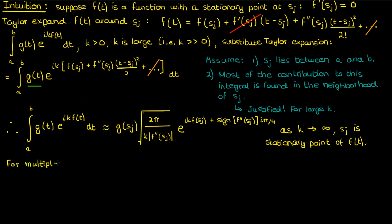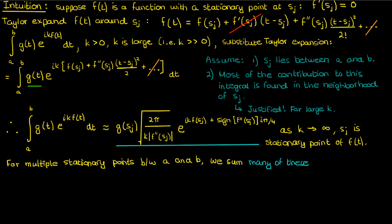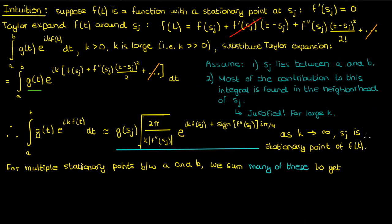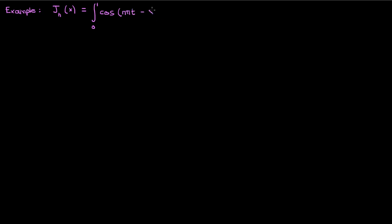Now let's do an example applying the stationary phase approximation using the Bessel function of the first kind of order n. This Bessel function, which I'll denote J_n(x), can be defined using the integral from 0 to 1 of cosine of (n pi t minus x times sine of pi t). Our goal is to approximate the value of this Bessel function as x approaches infinity.